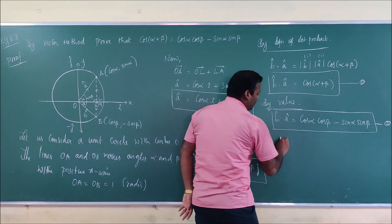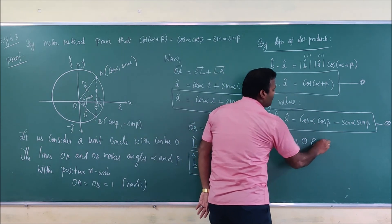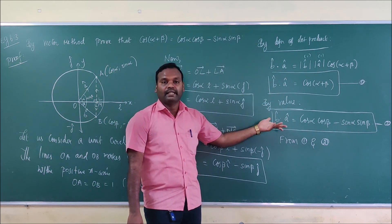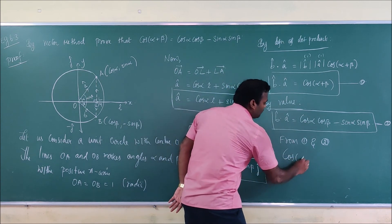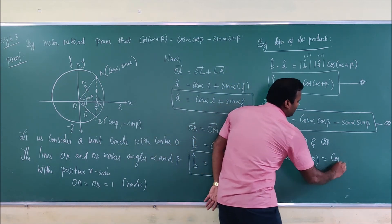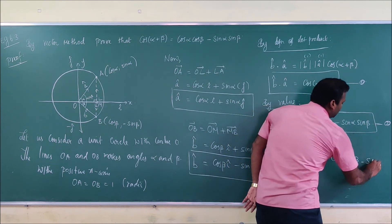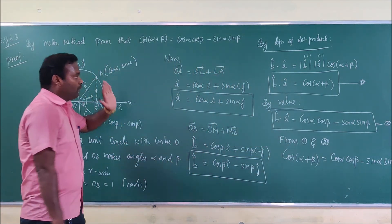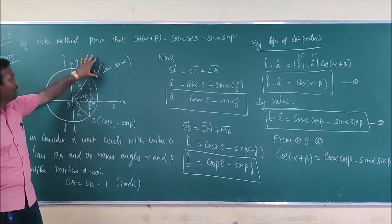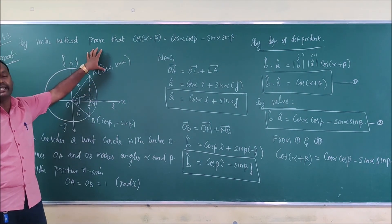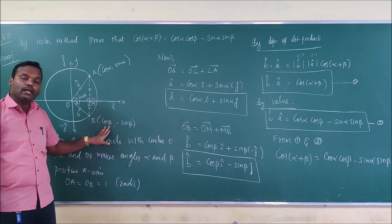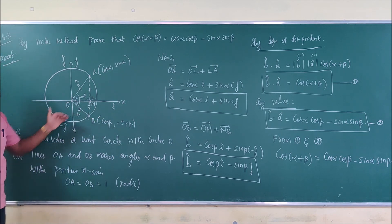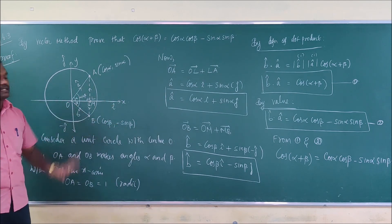Observing equations 1 and 2, the left-hand sides are the same. Since the left-hand sides are equal, the right-hand sides must also be equal. Therefore, cos(α + β) = cosα cosβ - sinα sinβ. This completes the proof. Note that coordinates were not separately proved here since they don't carry marks; coordinates are only used as a step in writing the vectors.